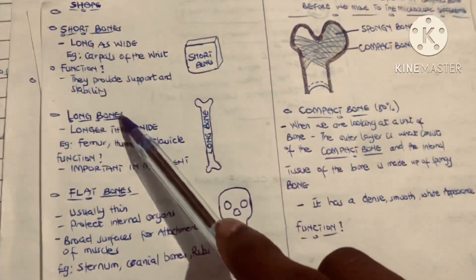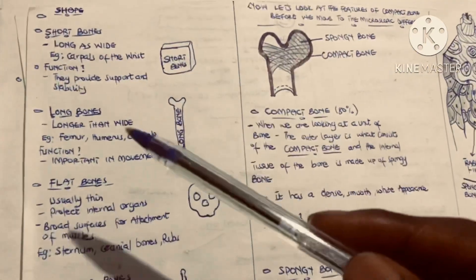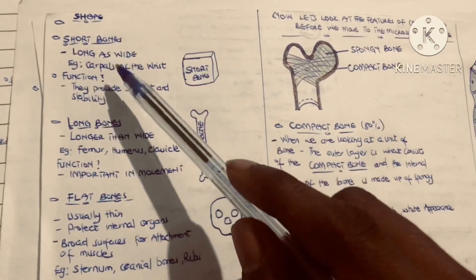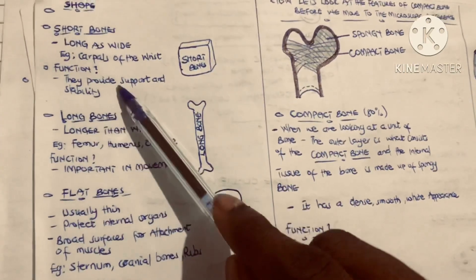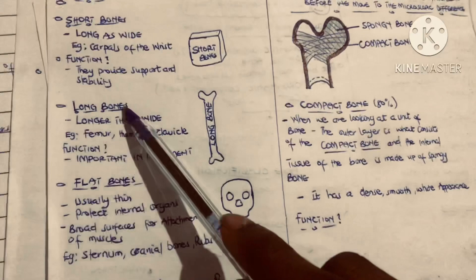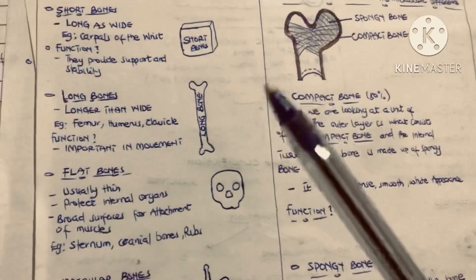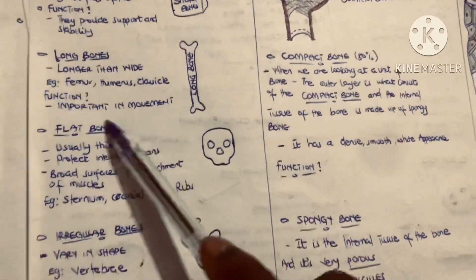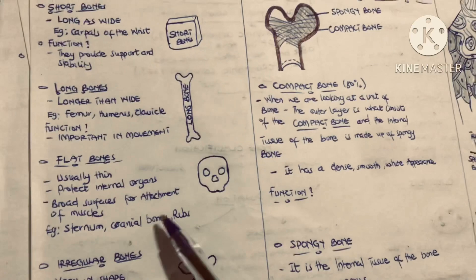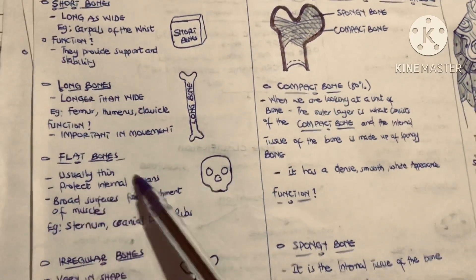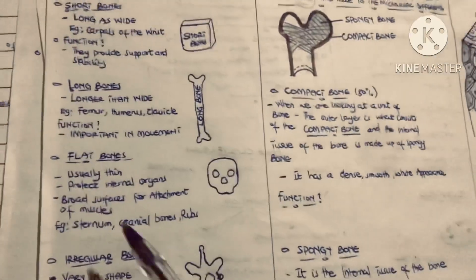Based on shape, we have short bones, long bones, flat bones, irregular bones, and sesamoid bones. Short bones are as long as they are wide — an example is the carpals of the wrist; their function is to provide support and stability. Long bones are longer than wide — examples include the femur, humerus, and clavicle; they help in movement. Flat bones are very thin — examples are the sternum, cranial bones, and ribs; they protect internal organs and provide a broad surface for muscle attachment.